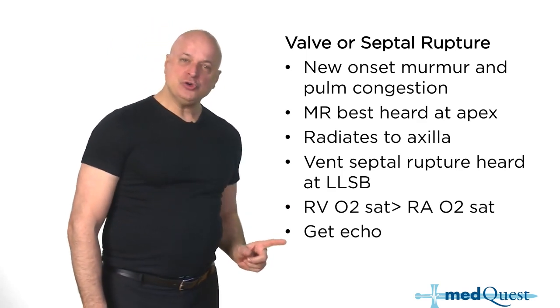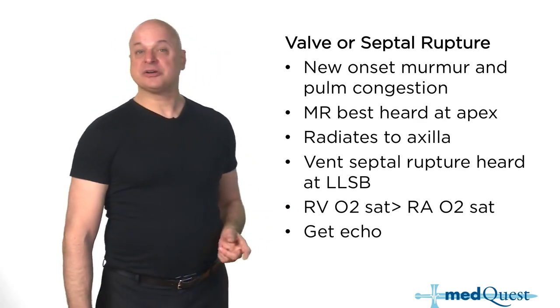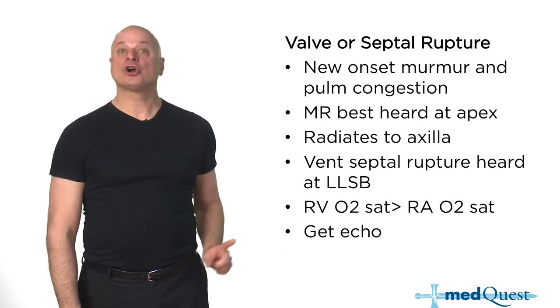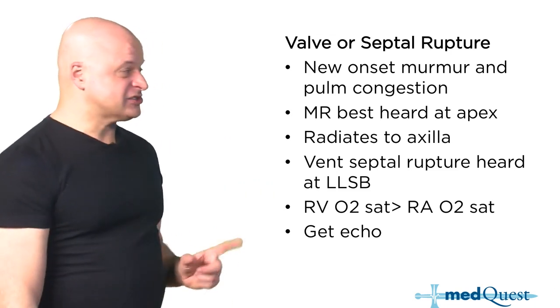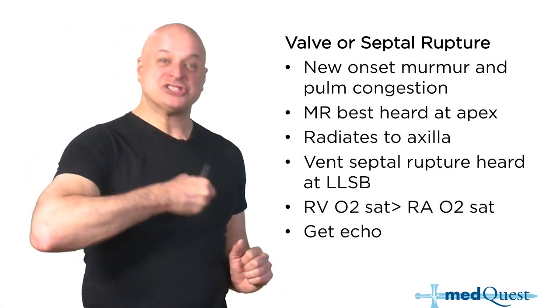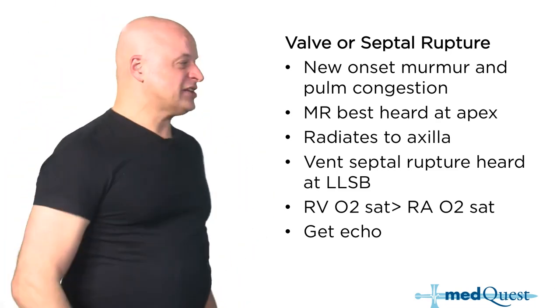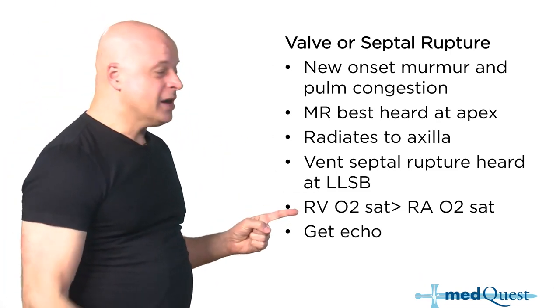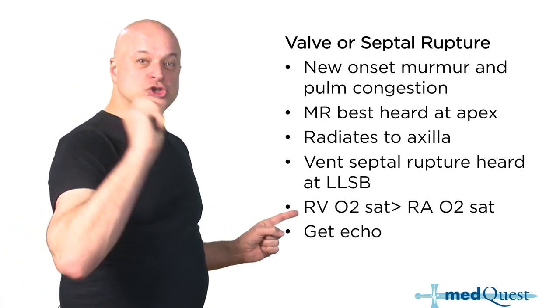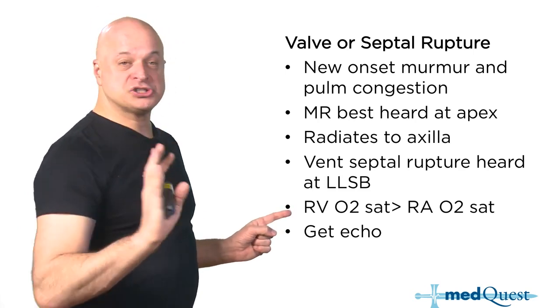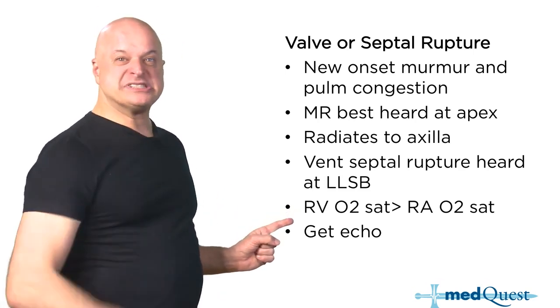Why is there a difference in saturation between the right atrium and right ventricle? Because there's a hole in the heart — oxygenated blood is shunting left to right. This is how you make the diagnosis. You'll be expected in many residencies to know how to put a catheter into the right side of the heart — the step up in saturation is the key finding.